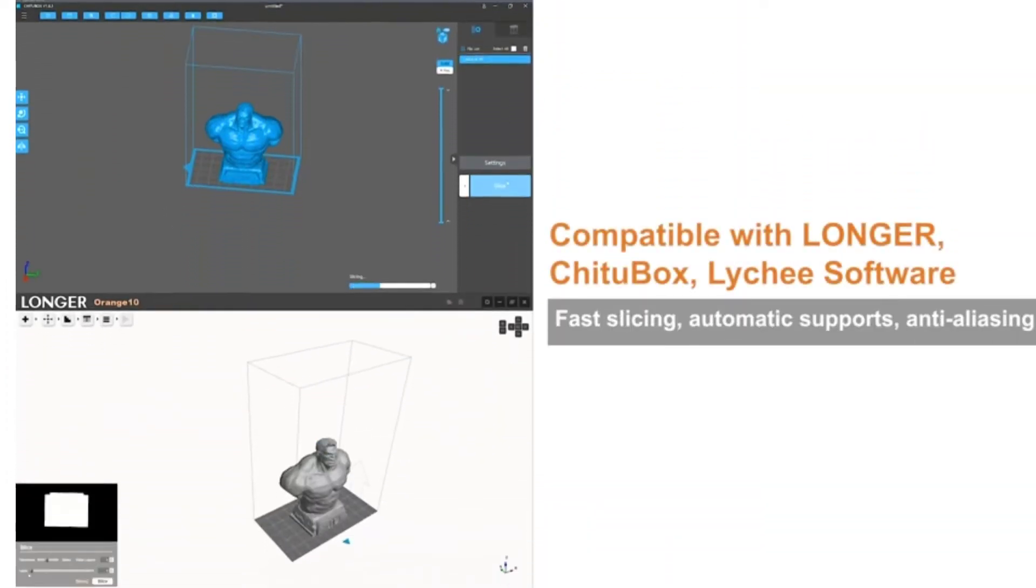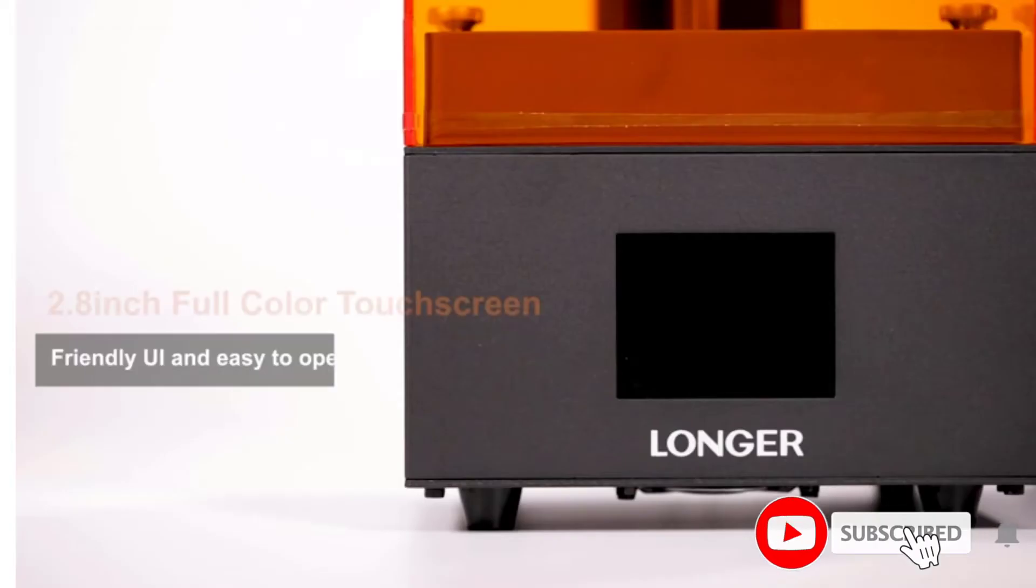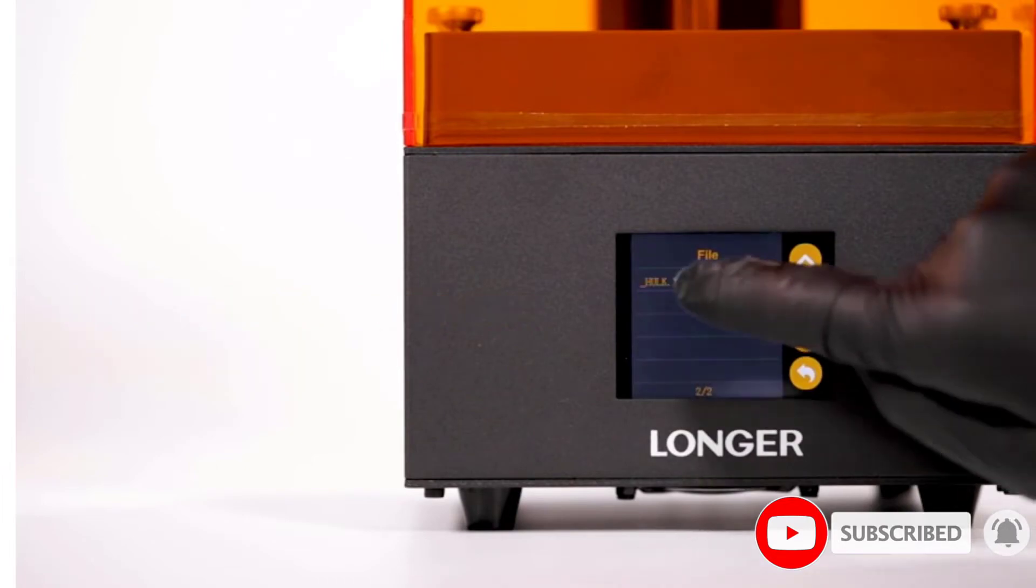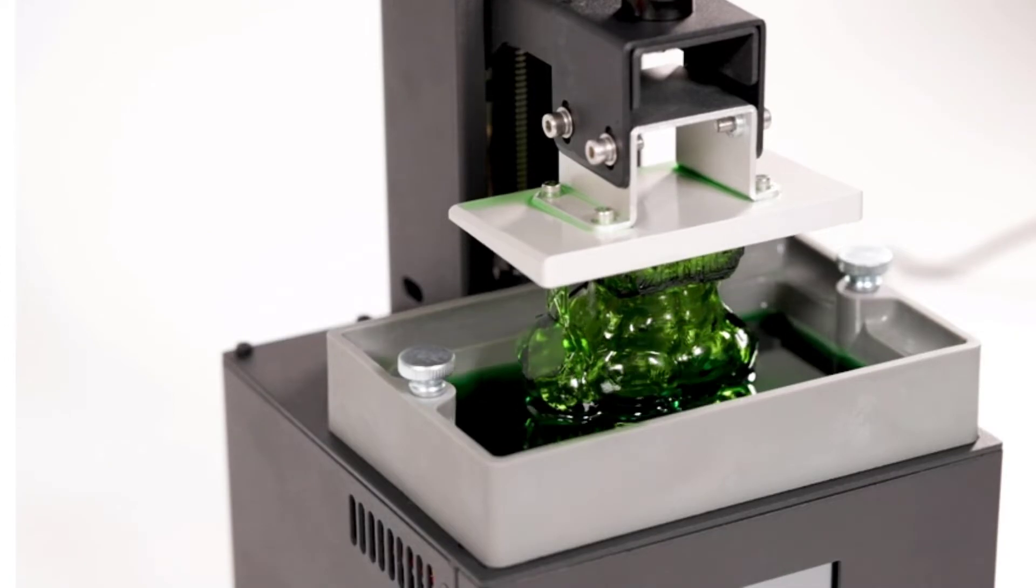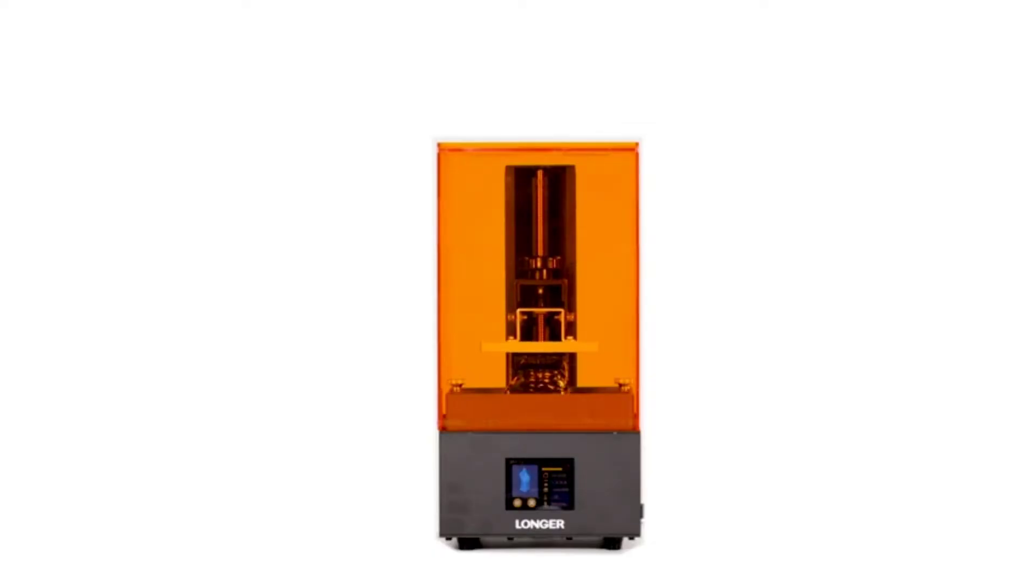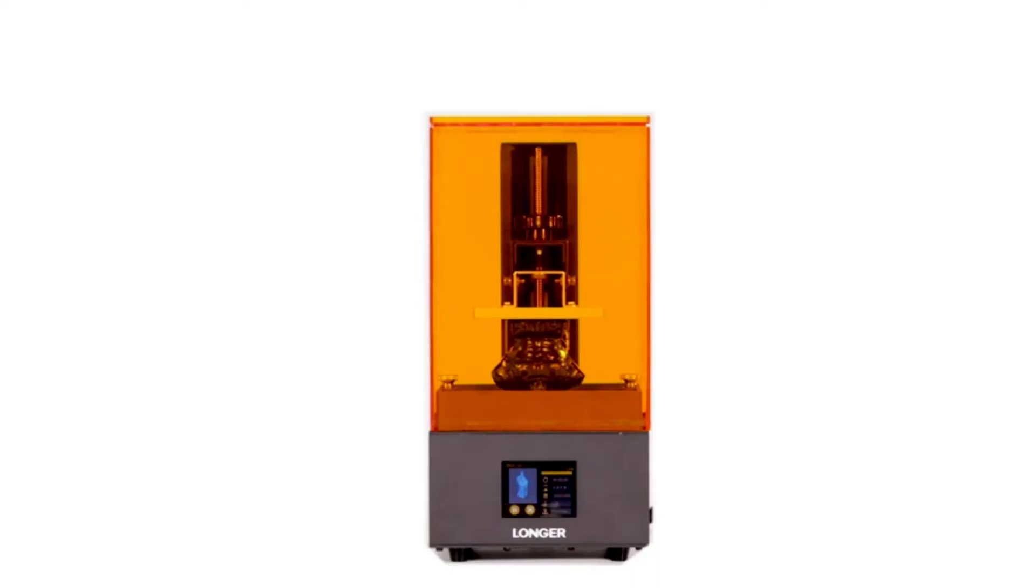Since it is an LCD printer, it delivers more precise prints than you can expect from FDM machines. While other printers use 4 spotlights, Longer Orange 10 incorporates 24 parallel LED lights. Aside from first-class printing quality, this model impresses with post-cure speed and substrate adhesion with parallel LED lighting.